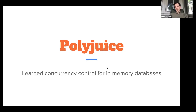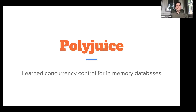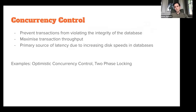Polyjuice is a paper published this year in Usenix. The whole idea of it is to learn concurrency control algorithms for specific transactions and transaction types. The basic idea is that a single concurrency control method isn't necessarily optimal for all transactions the database will process.